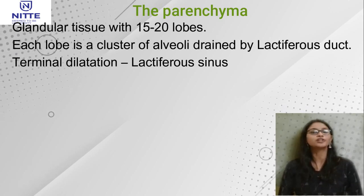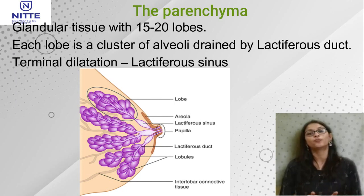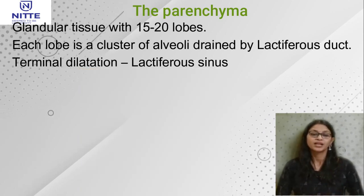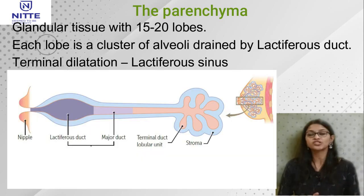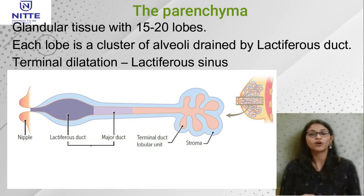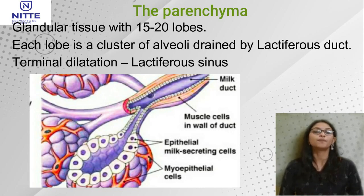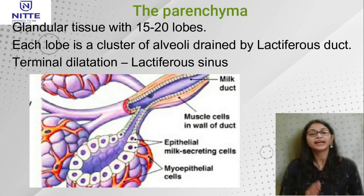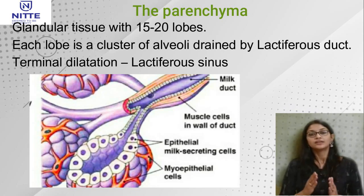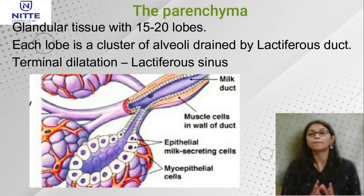The parenchyma contains glandular tissue comprising about 15 to 20 lobes, and each lobe contains a cluster of alveoli drained by a lactiferous duct. As the lactiferous duct reaches near the nipple it shows a dilatation called the lactiferous sinus. The lining epithelium changes depending on gland activity — in the resting phase it is lined by cuboidal cells, and during lactation the cells change from cuboidal to columnar. Surrounding these glands are myoepithelial cells.